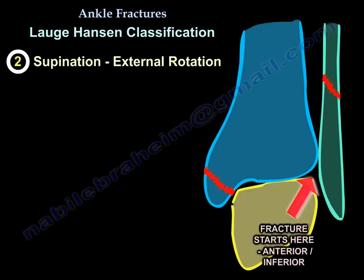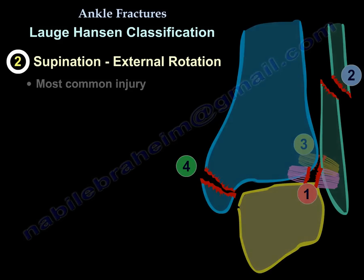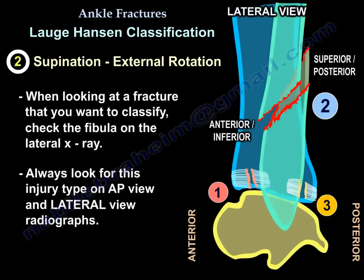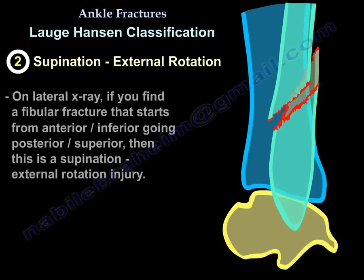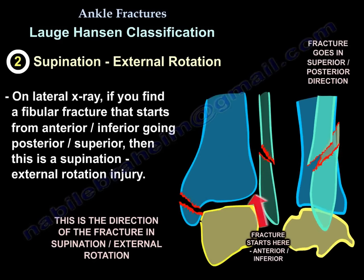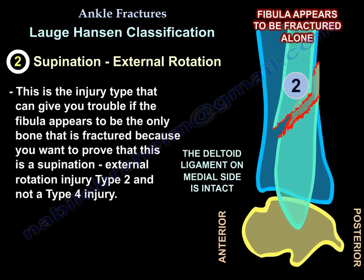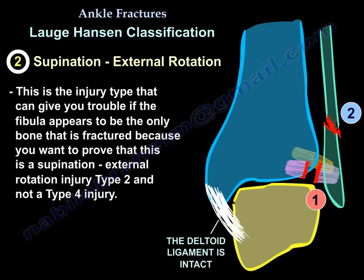The second type is the supination-external rotation injury — the most common ankle injury. To identify it, look at the lateral X-ray. When you see an ankle fracture you want to classify, always look at the fibula on both the AP and the lateral radiograph. If the fracture runs from anterior-inferior to posterior-superior, that is a supination-external rotation injury. This can be tricky if the fibula appears to be the only fractured bone.